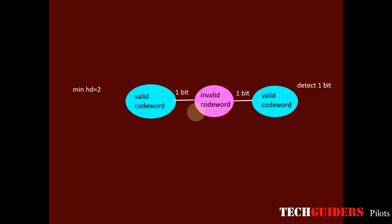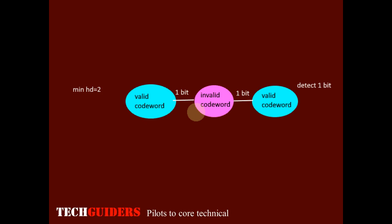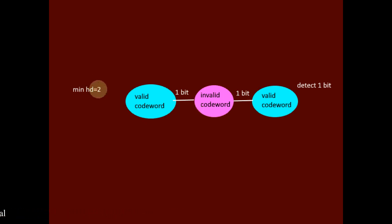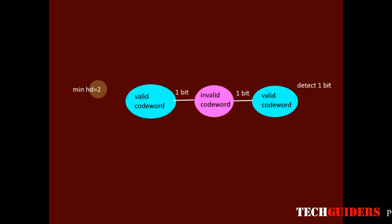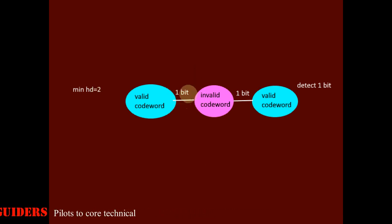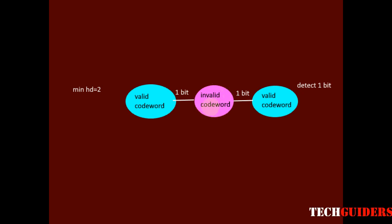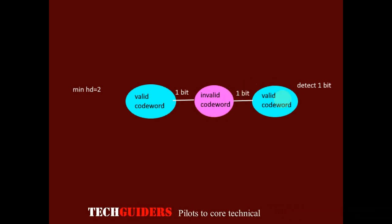We discussed the minimum Hamming distance required for error detection in the previous video. We saw that if the minimum Hamming distance is 2, we will be able to detect a 1-bit error. But will we be able to correct it? A 1-bit error on a valid codeword generates an invalid codeword which overlaps with the invalid codeword generated by a 1-bit error on another valid codeword.